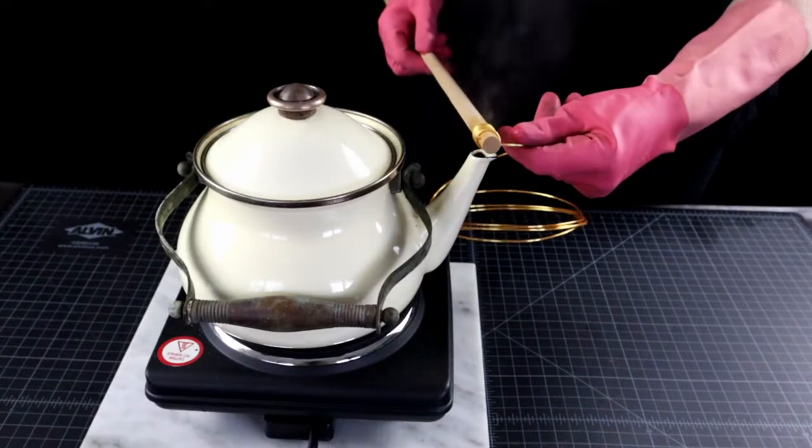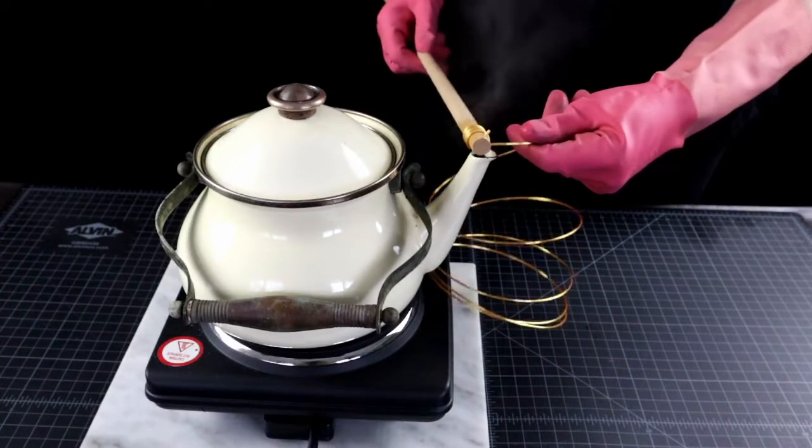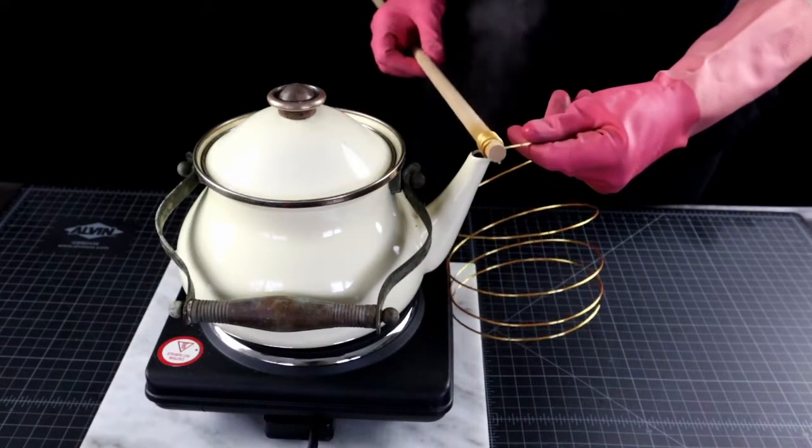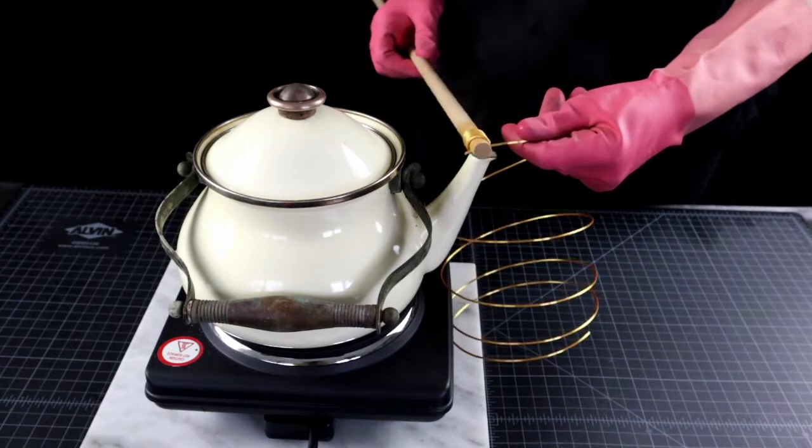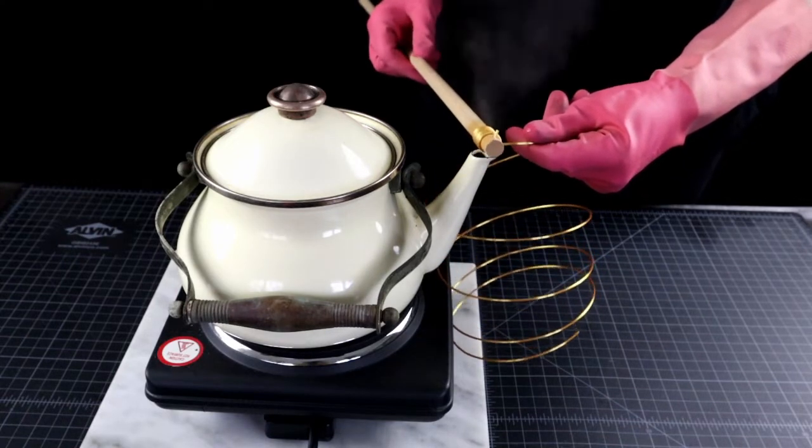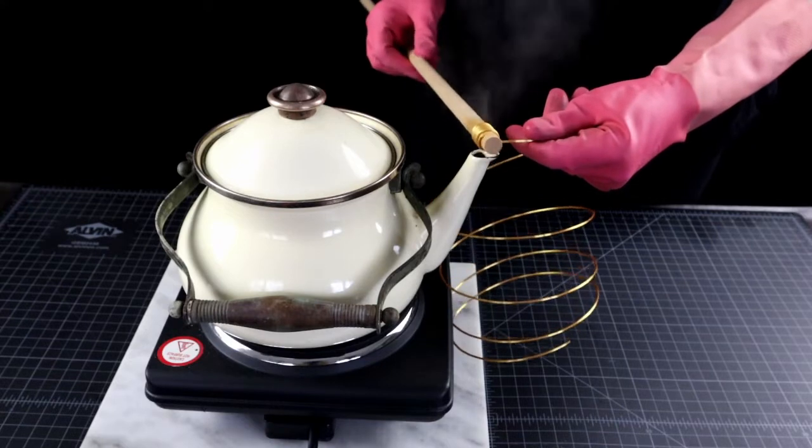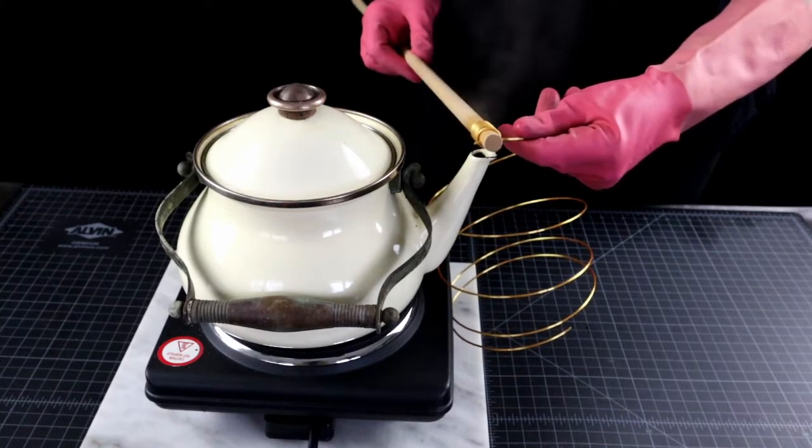If this is your first time making chain mail, do yourself a favor and don't make your rings too tiny. I am using half an inch sized dowel here. You can go smaller once you get used to this process.